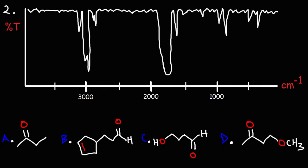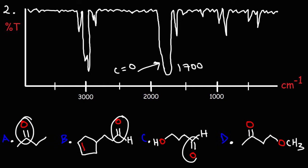Now let's work on our second problem. Which of the following molecules corresponds to the IR spectrum we see on screen — is it A, B, C, or D? Feel free to pause the video and work on it, then play to check your answer. The first thing we can easily identify is the presence of the carbonyl functional group — the C=O stretch at 1700. For all of the answers, we either have an aldehyde or a ketone.